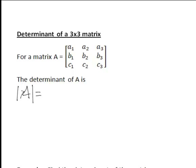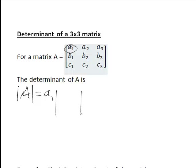The notation for the determinant is often given as two parallel lines with the name of the matrix or the matrix inside them. If we expand along the first row, it will be the element of the first row and first column, A1, times the matrix determinant obtained when we cover up row 1 and column 1.